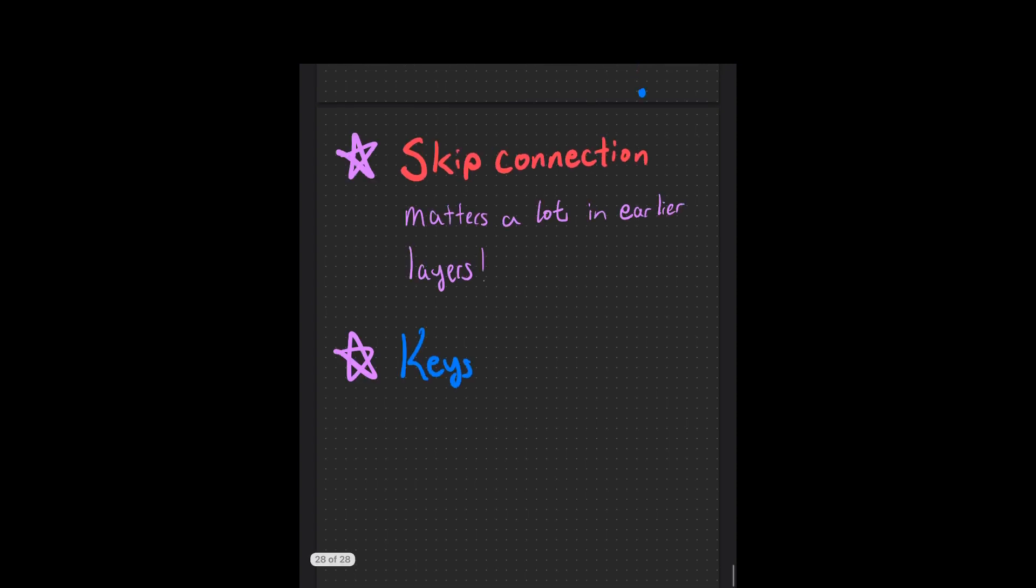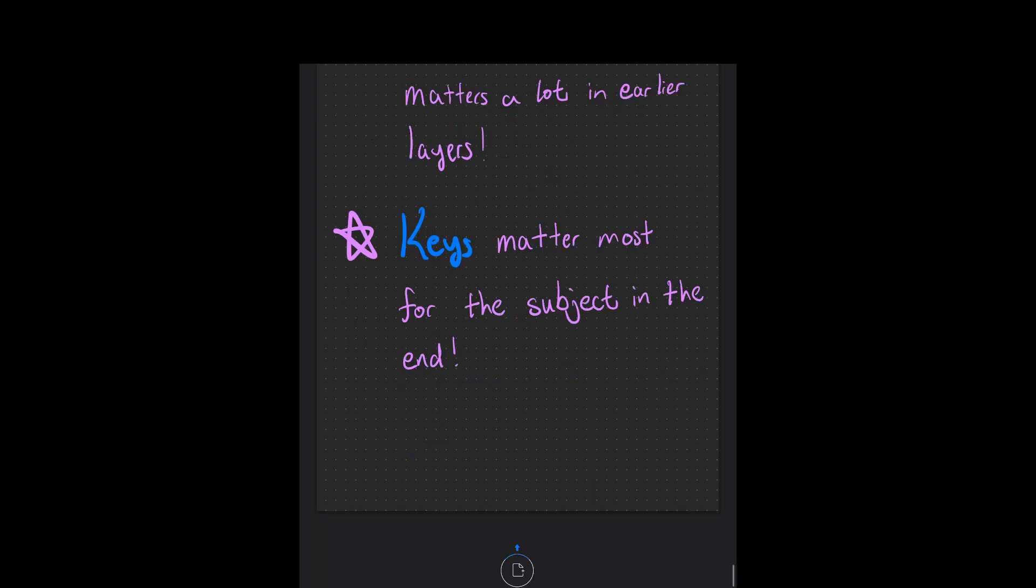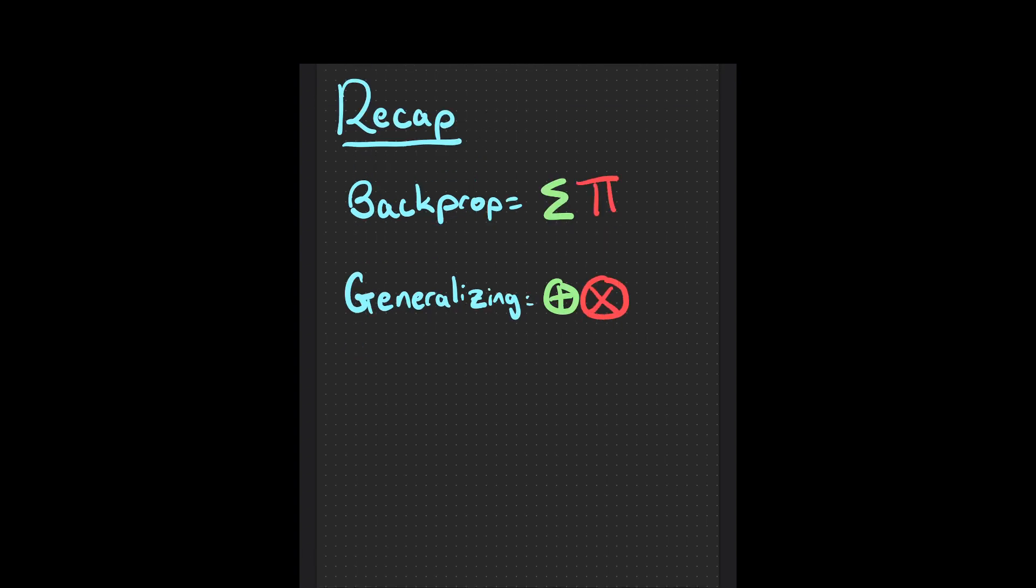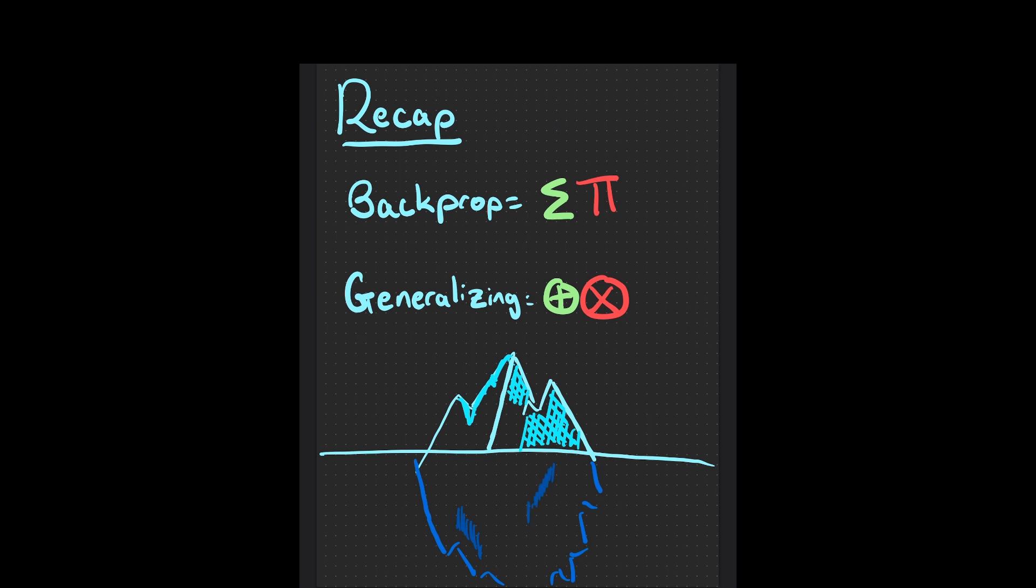To summarize takeaways from this experiment, the skip connection matters a lot for earlier layers, and the keys matter most for the subject. Okay, let's recap. We talked about how backprop is a dynamic program using the sum-product semiring, and we can generalize it to other ones and therefore see interesting things. The beauty of it all is this is just the tip of the iceberg. What semiring will you discover interesting things with?